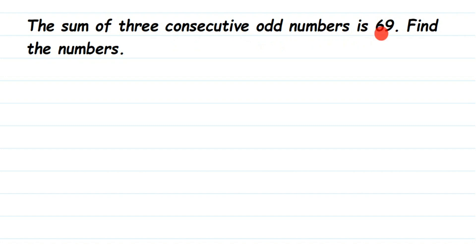What do we mean by consecutive? Consecutive means a number which comes one after the other. They're talking about consecutive odd numbers. Suppose 3 is the first odd number, then the second consecutive odd number will be 5, because after 3 the next immediate odd number is 5, and after that 7. So 3, 5, 7 become three consecutive odd numbers.